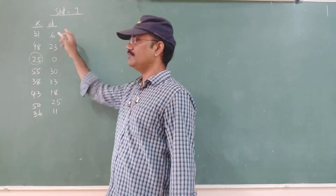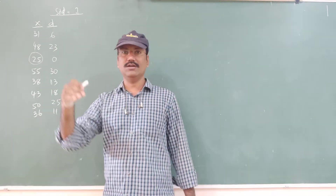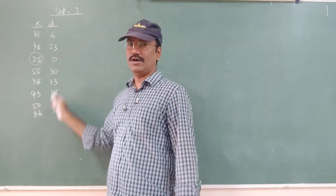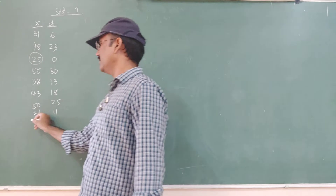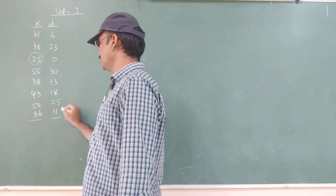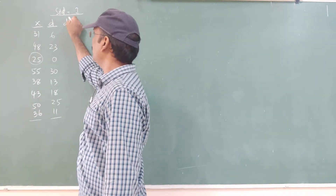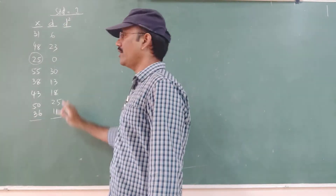Why are all these numbers positive? Because we have taken the smallest number and subtracted from all numbers, so obviously you will get positive numbers only. Now make the square of each of these numbers.